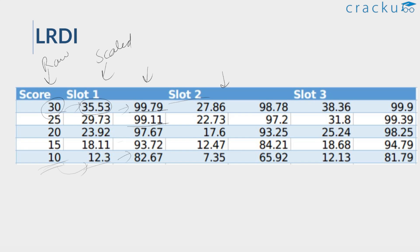In Slot 2 LRDI, if your raw score was 30, the scaled score came down to 27.86. For 25, it came down to 22; for 20, to 17; for 15, to 12.47; and if your score was 10, the scaled score was 7.35. These are the respective percentiles for these scores.